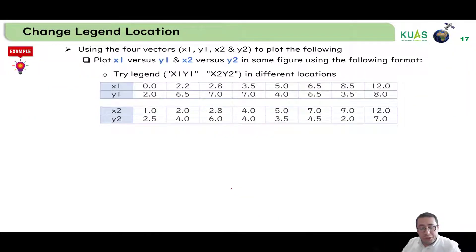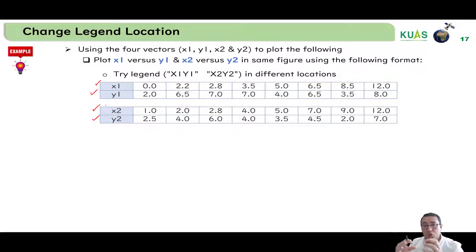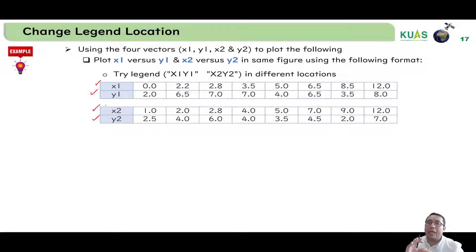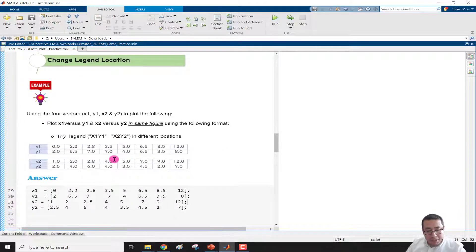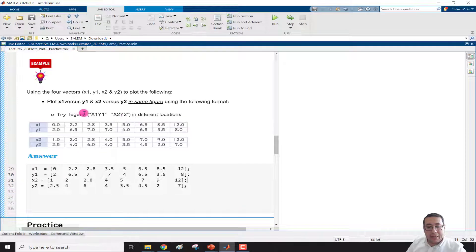Let's take an example. We have four vectors: x1, y1, x2, y2, and we need to draw x1 versus y1 and x2 versus y2 on the same figure. We'll try different legend locations to avoid overlap. In the live script, I have this same example set up with those four vectors.